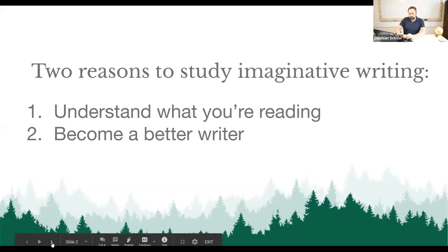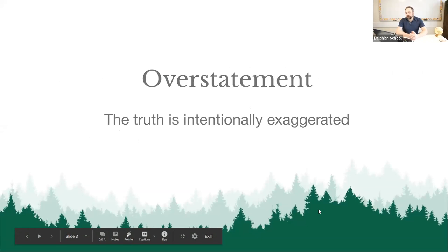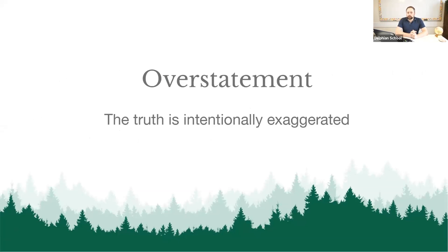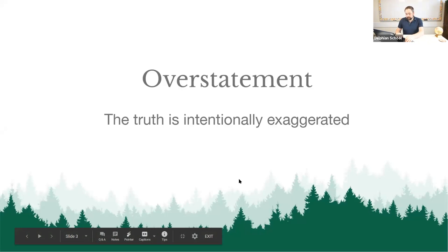The first type of imaginative writing we're going to talk about is overstatement. In overstatement, the truth is intentionally exaggerated. Intentional means you do something on purpose. Overstatement that you didn't do on purpose might be more similar to fibbing or lying. But in writing, if you are intentionally overstating something with the purpose of activating somebody's imagination, that type of imaginative writing is called overstatement.